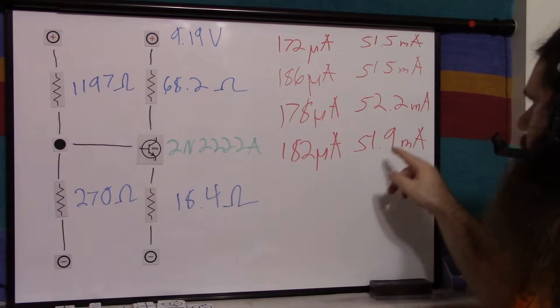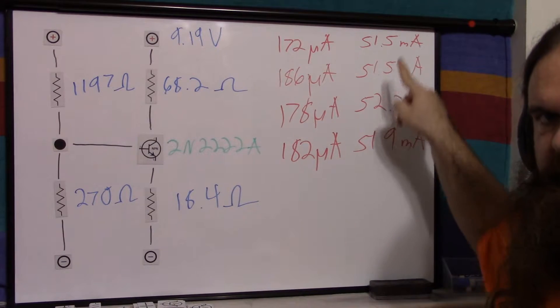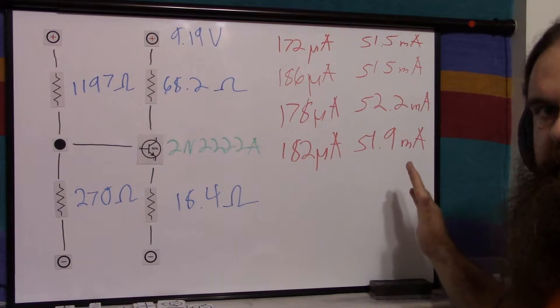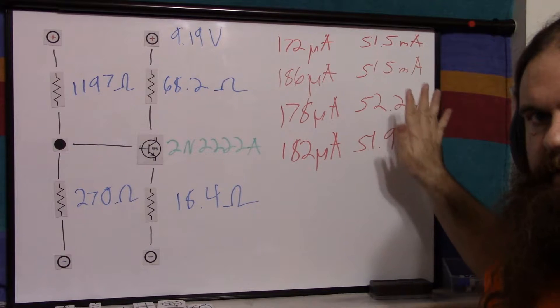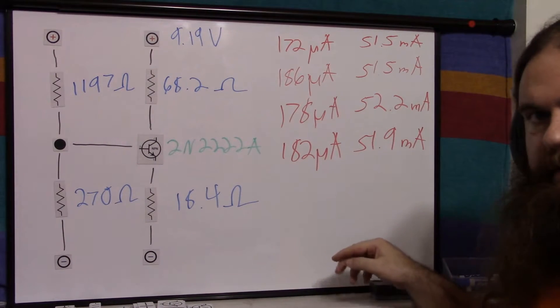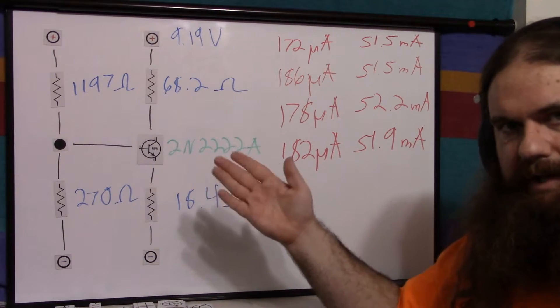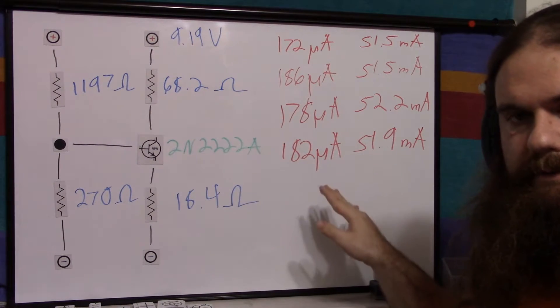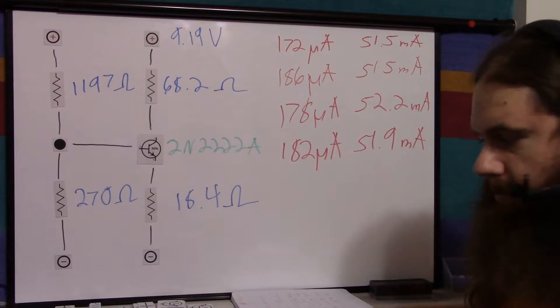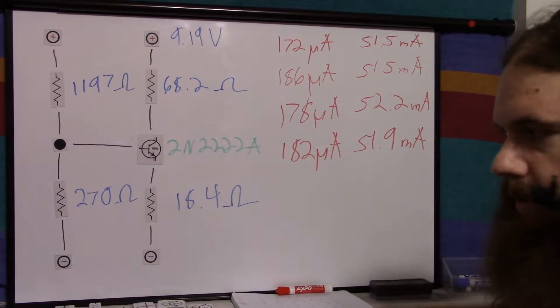And the final one gave me 182 microamps base current for 51.9 milliamps of collector current. So you should be able to see here that there is a number this is hovering around. There's variance. But there's a number here that all of these are hovering around and the base current is varying to match it. So that's this. That's how it's supposed to work. Now, without something to compare it to, that doesn't mean anything. So let me show you the other circuit.